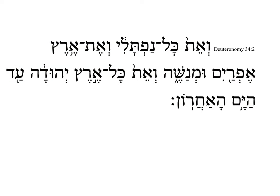You can see that this continues the sentence from the previous verse, beginning as it does with the definite direct object marker. And all of Naphtali, and the land of Ephraim and Manasseh, and all the land of Judah, until the sea, the one which was after — that is the Mediterranean Sea.